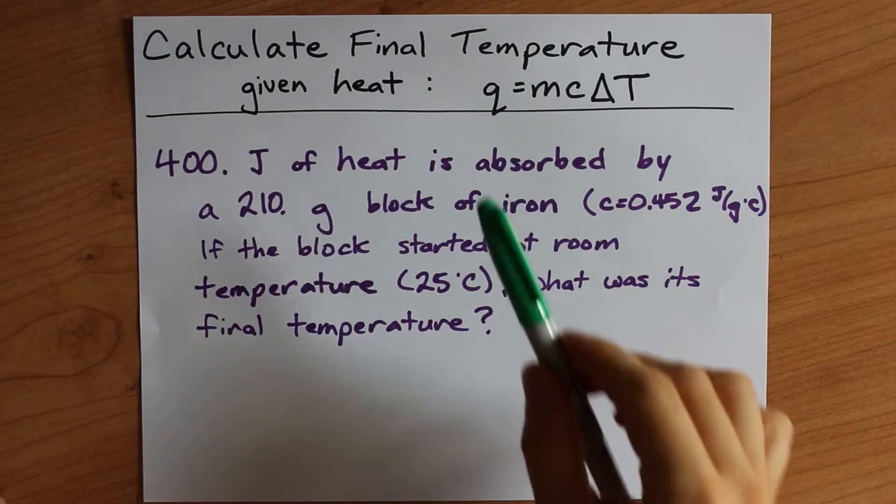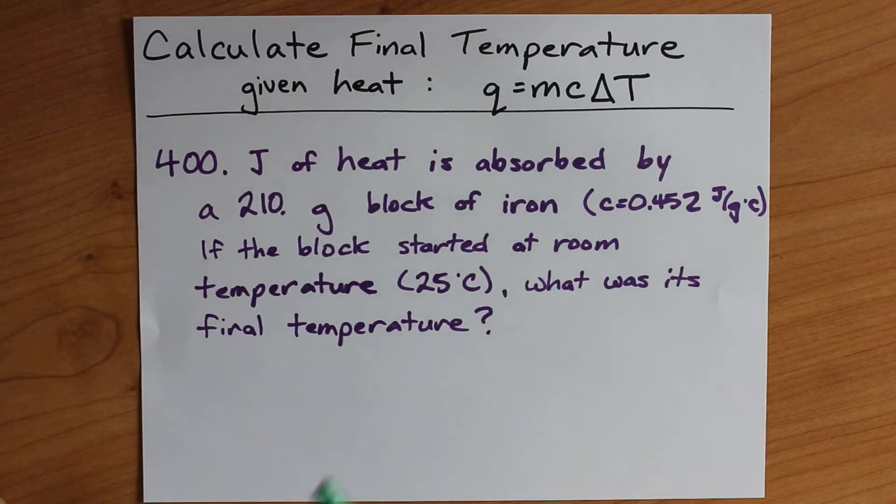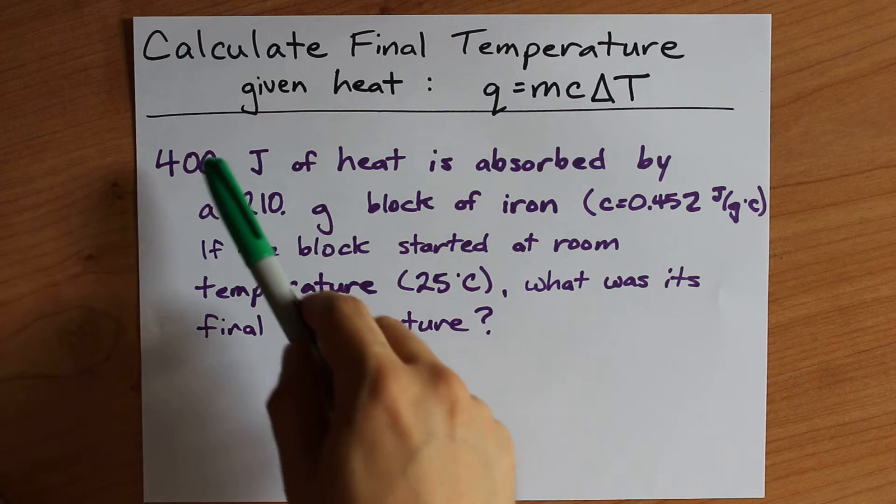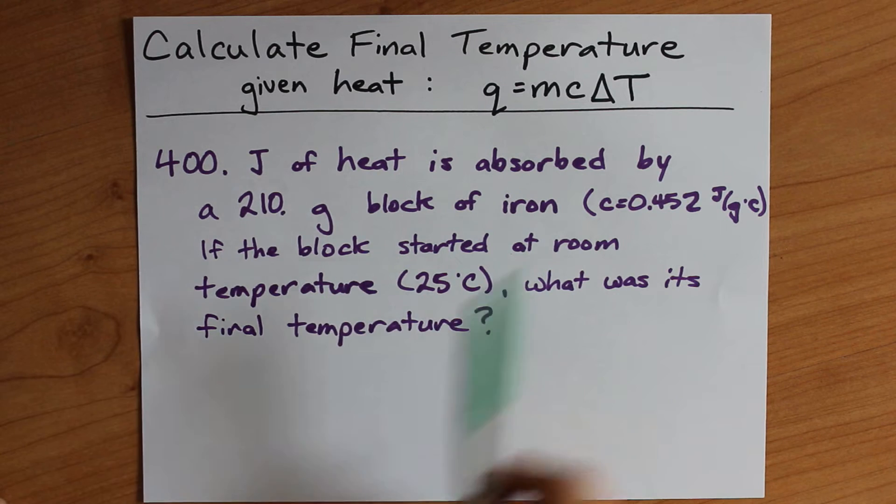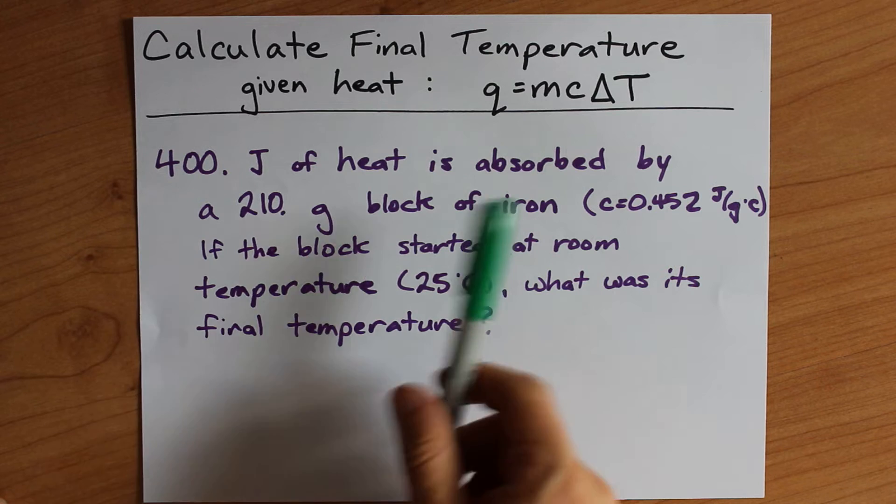Can you calculate the final temperature using q equals mc delta t if you're given heat, mass, and initial temperature and specific heat capacity? Yes you can.